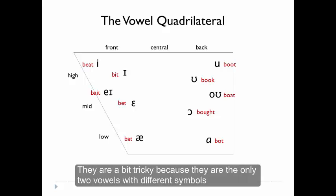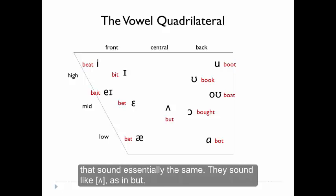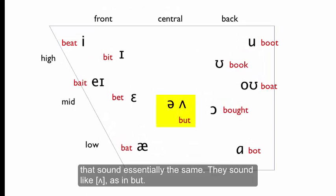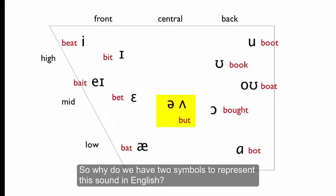They're a bit tricky because they're the only two vowels with different symbols that sound essentially the same. They sound like schwa, as in but. But why do we have two symbols to represent this sound in English?